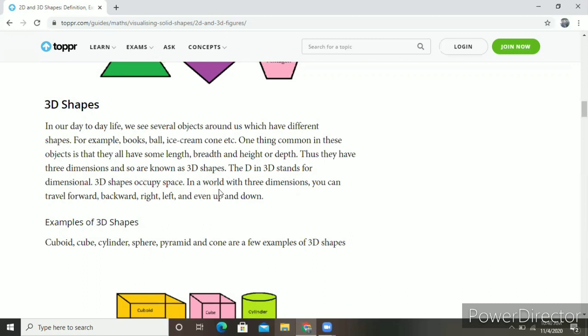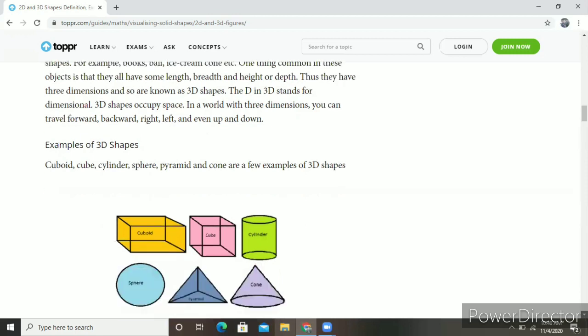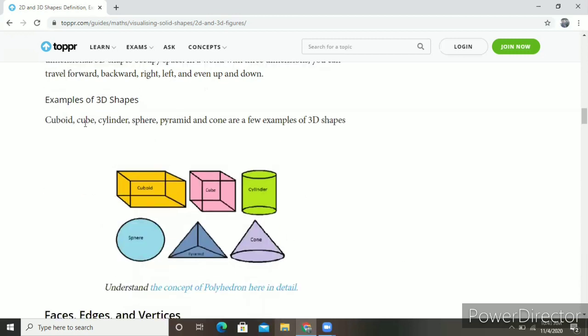3D stands for three-dimensional. 3D shapes occupy three-dimensional world. You can travel forward or backward, right, left, even up and down. You can easily understand that three-dimensional objects cover space as compared to 2D shapes. The two dimensions means length and breadth, and three dimensions means length, breadth, and height.